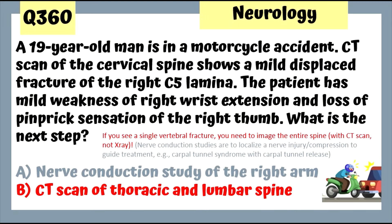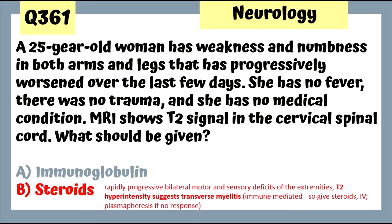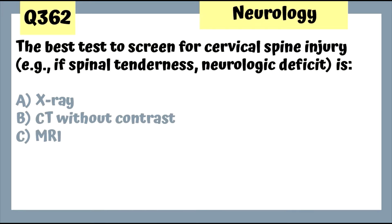Question 361: A 25-year-old woman with weakness and numbness in both arms and legs progressively worsening over days, no fever, no trauma, no medical history; MRI shows T2 signaling in the cervical spinal cord — treat with steroids (IV), then plasmapheresis if no response. We're dealing with transverse myelitis.